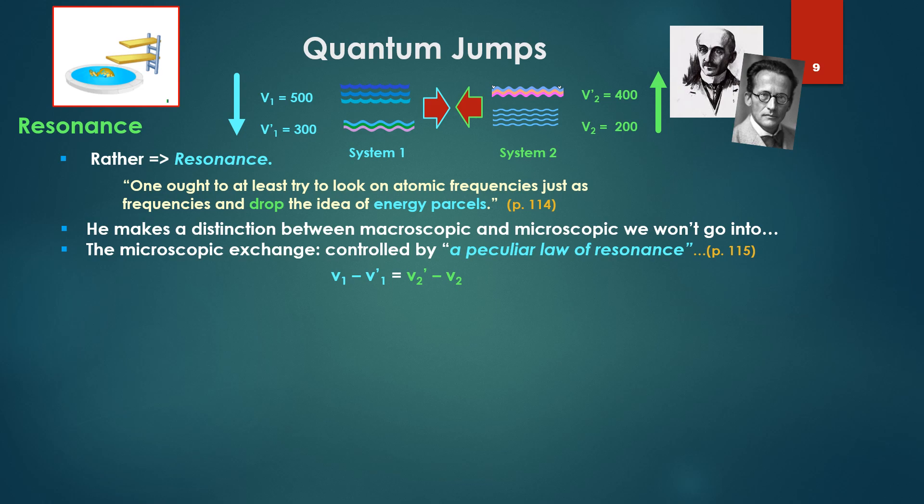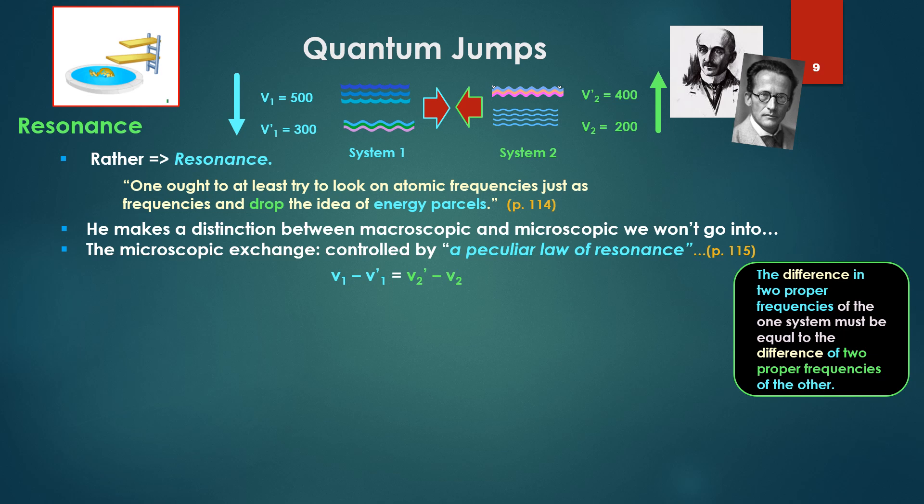ν₁ minus ν₂ for system one. So frequency 1 minus the new frequency, frequency 1. In the second system, another frequency, proper mode, minus the second frequency. So, here we're getting the difference in two proper frequencies, ν₁ minus ν'₁ of the one system, must be equal to the difference of the two proper frequencies, ν₂' minus ν₂ of the other.